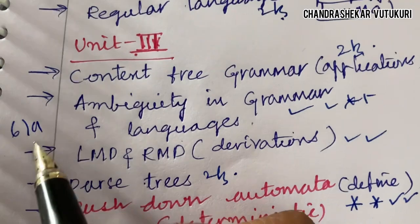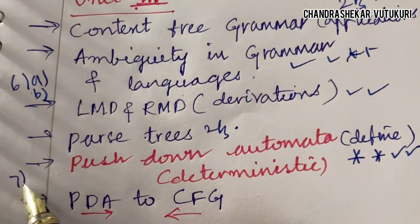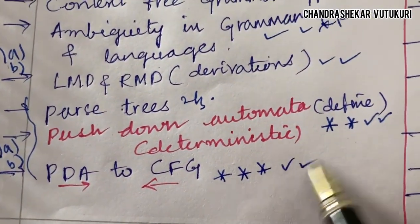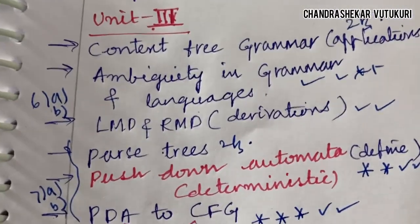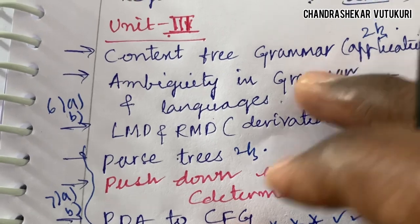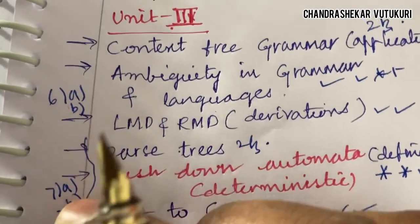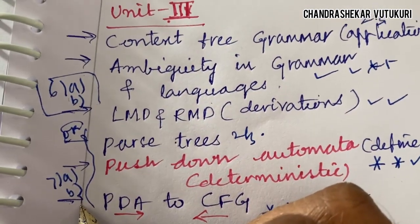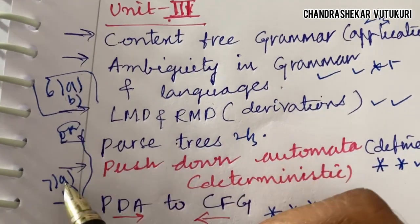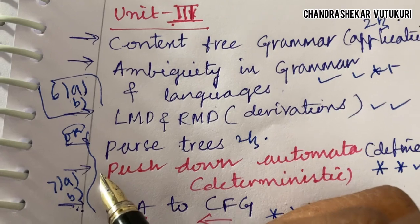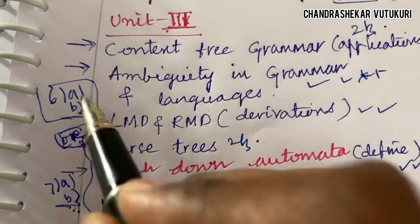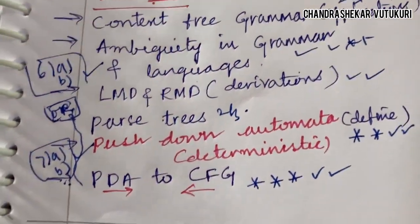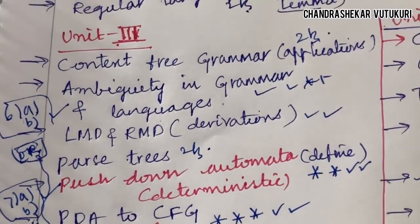From Unit 3 we can expect questions 6A, 6B, 7A, and 7B. Converting PDA to CFG is a gunshot and topmost question, so you may get two questions from this unit. Important note: if questions 6A/6B and 7A/7B come from Unit 3, you must write either 6AB or 7AB completely — not mix 6A with 7B — because the option is within the same question. You have 3 hours to complete both Part A and Part B.